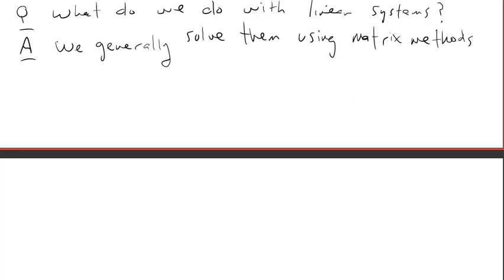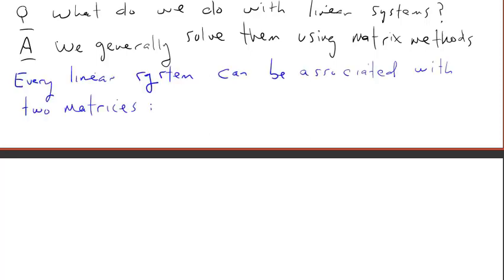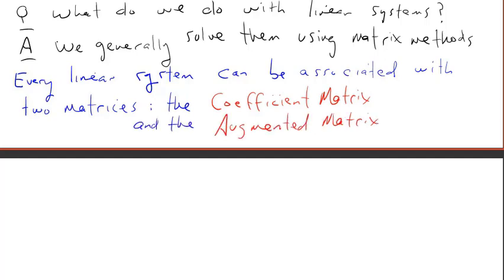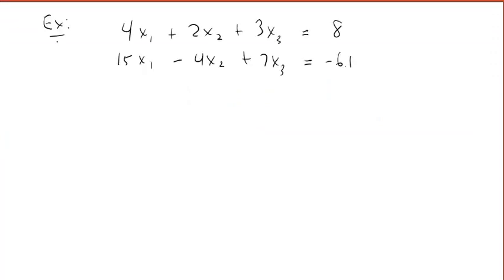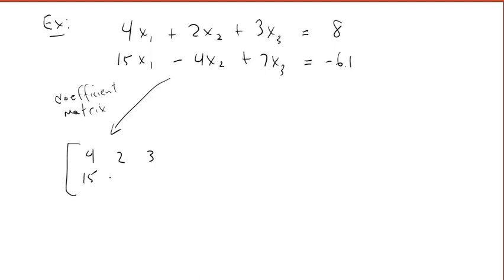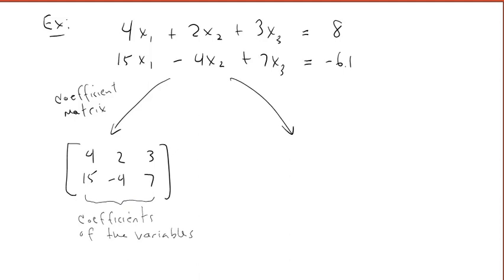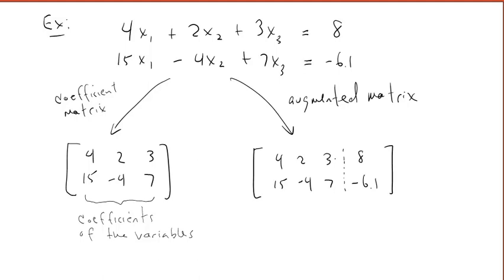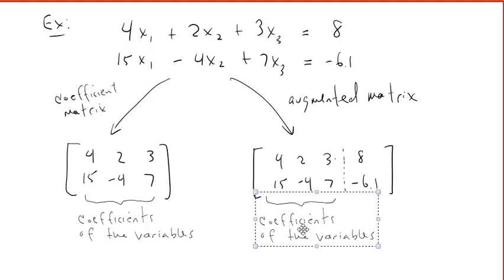What do we do with linear systems? We generally solve them using matrix methods. For now, I want to introduce two matrices: the coefficient matrix and the augmented matrix. For this example with two equations and three variables, the coefficient matrix is formed by writing down the coefficients of x1, x2, and x3 — the first equation gives the first row, the second equation gives the second row. The augmented matrix is the same but with one extra column, the data column, containing the constants on the right-hand side. Typically we separate the coefficients from the data using a dotted vertical line.